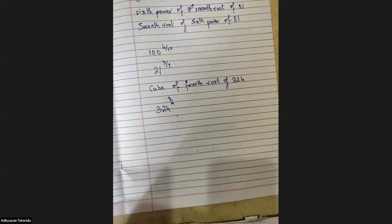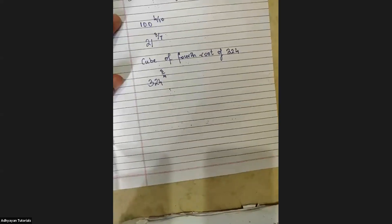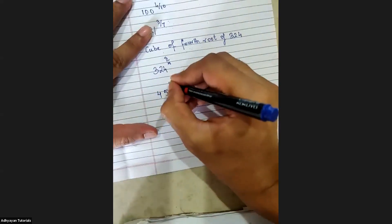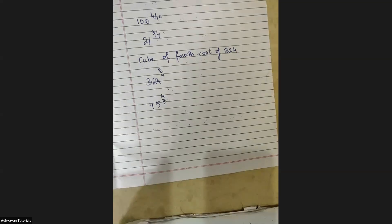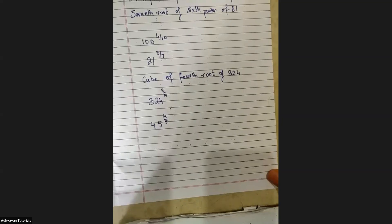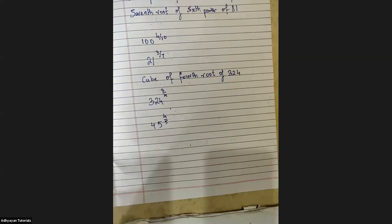Let's try Tvisha from JB Nagar. Let's try 45 raised to four upon five. What is the power? Four. What is the order? Five. Tell me power of the root: fourth power of fifth root of 45. Correct. Now the other way — root of the power: fifth root of fourth power of 45.